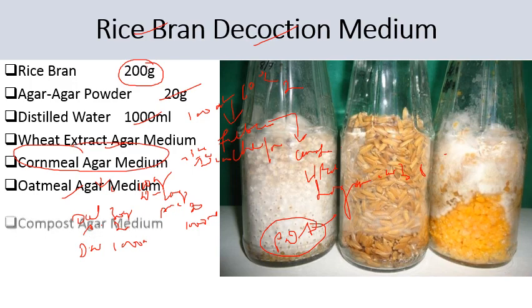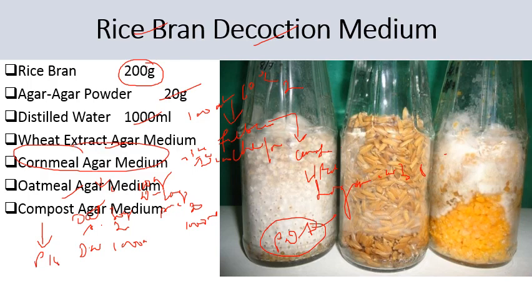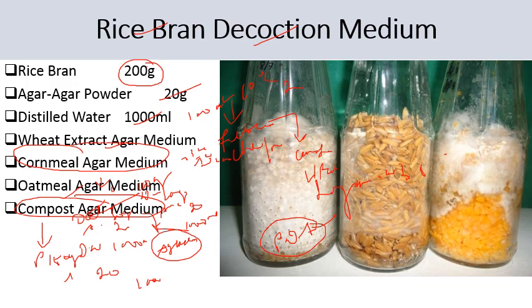Next we have compost agar medium. It contains pasteurized compost 150 grams, agar agar powder 20 grams, and distilled water 1000 ml. Procedure is the same as described for the rice bran decoction medium. This compost agar medium is one of the best media for culturing Agaricus species. This is all about the media that we use for mushroom cultivation.